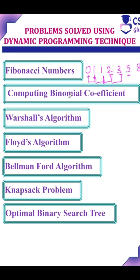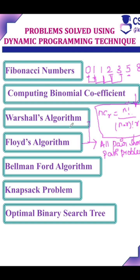Computing binomial coefficient: the formula is NCR is equal to N factorial divided by N minus R factorial into R factorial.